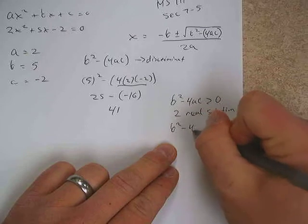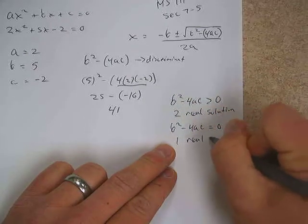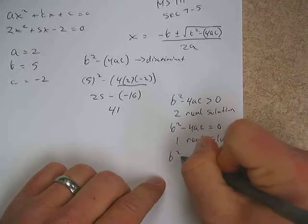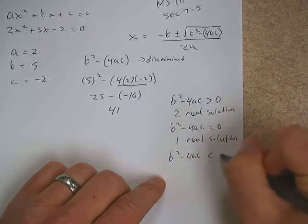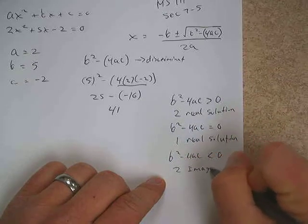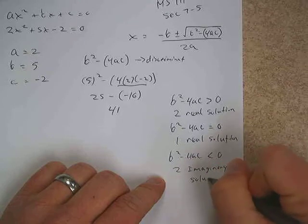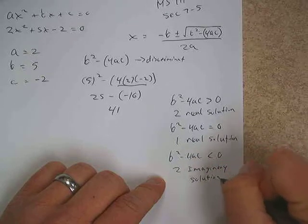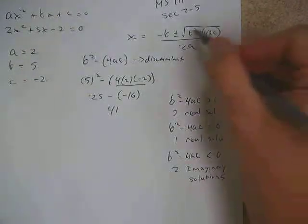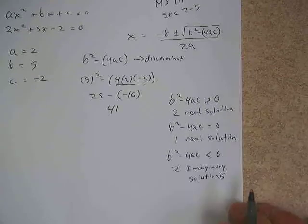If b squared minus 4ac equals 0, we're going to have one real solution. And if b squared minus 4ac is less than 0, we're going to have two imaginary solutions — because if you get a negative discriminant, you put that negative under the square root, and just like in lesson 7-3, we get answers that involve i, which are our imaginary solutions.